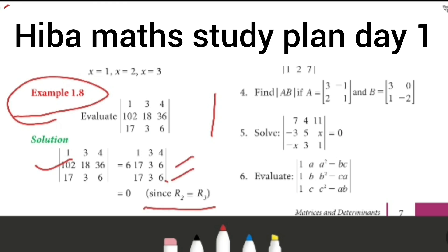Since R2 is equal to R3, the matrix value is 0. So 6 into 0 is 0.